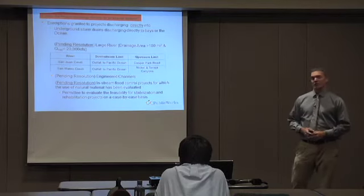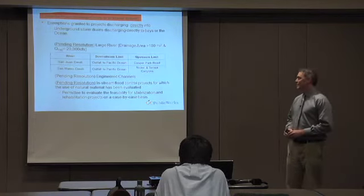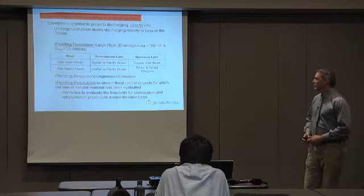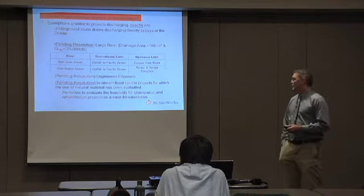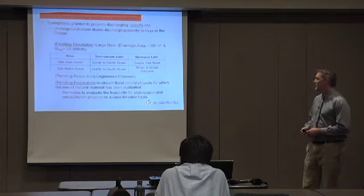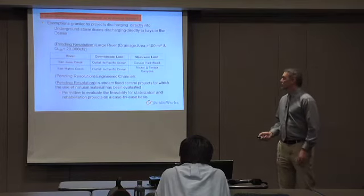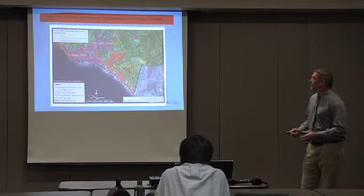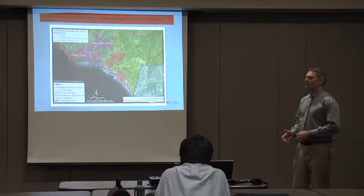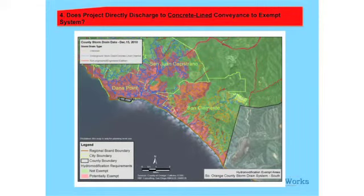Between these two, we'll probably get the large river exemption, but the engineered channels — the ship might have sailed on that one. We're also going to push on in-stream flood control projects as well as stream restoration projects, so we'll see where that goes. The next question is: does the project discharge to a concrete-lined system? This may change depending upon whether it's concrete-lined and the larger exemption or engineered channels, but for right now, this is what compliance essentially is.